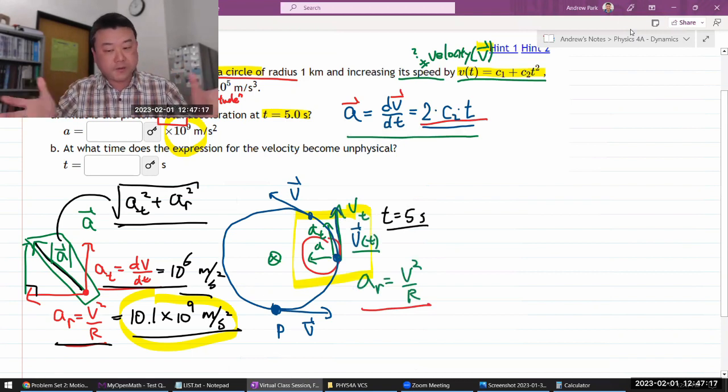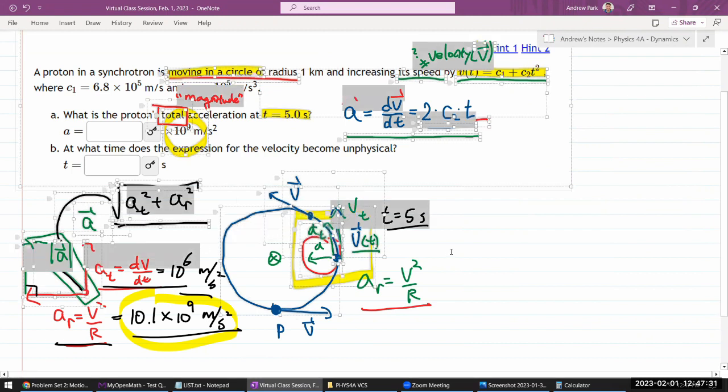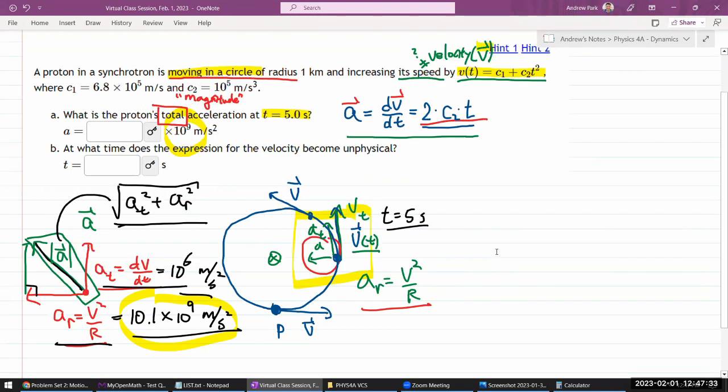But if you want it to be everything to be conceptually on solid ground, then so you should work out both components of acceleration, the perpendicular component, and figure out its magnitude using this right formula. Part to be, at what time does the expression for velocity become unphysical?